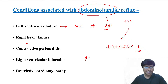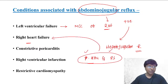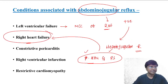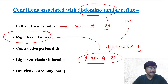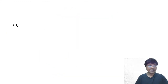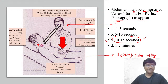Pulmonary hypertension and pulmonary stenosis — both will make the individual land up in right heart failure ultimately. Remember: the abdomen must be compressed for 10 to 15 seconds for the reflex to appear.